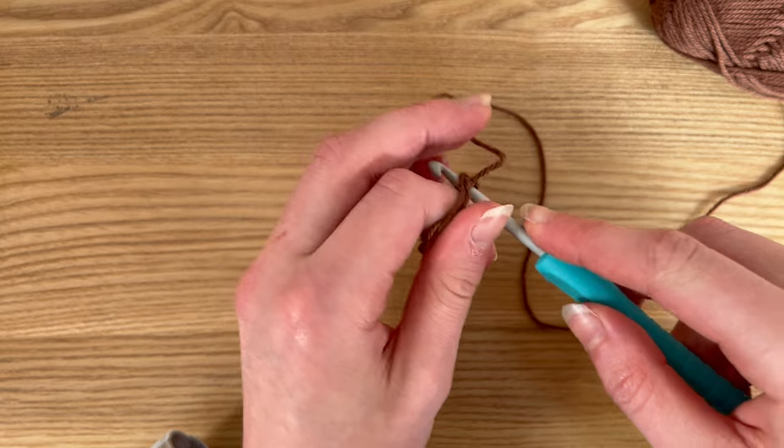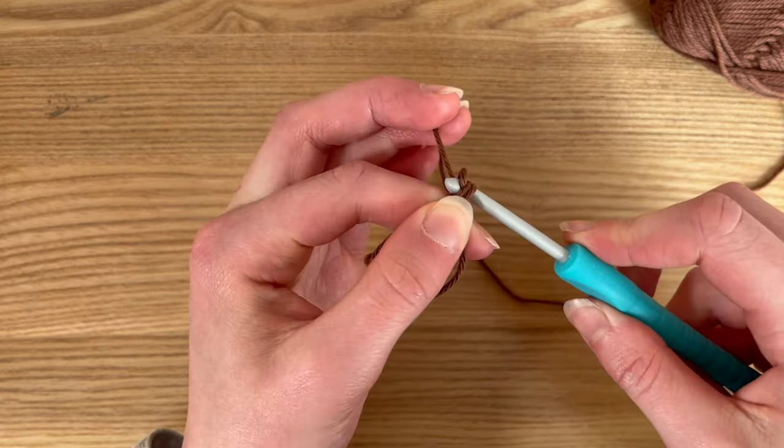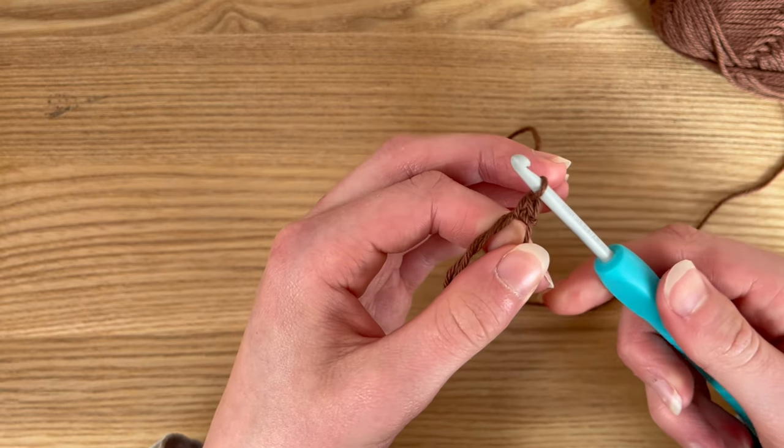So I insert the hook into the ring, yarn over, pull through, yarn over, pull through. That creates our first stitch.